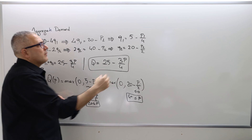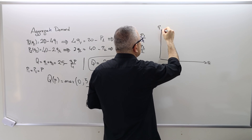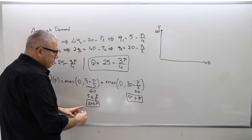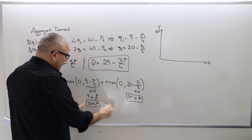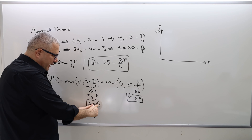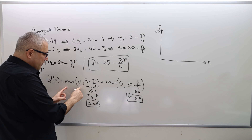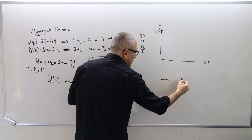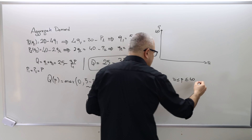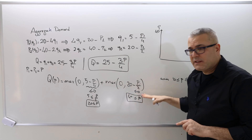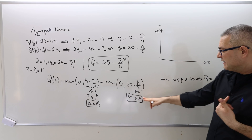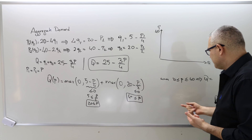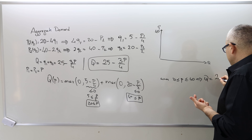So on a quantity-versus-price graph, the maximum price will be 40. Whenever price is between 20 and 40, the first term is negative, so its max with zero is just zero. Therefore, when p is between 20 and 40, aggregate demand Q equals just 20 minus p over 2, since that term is still positive.